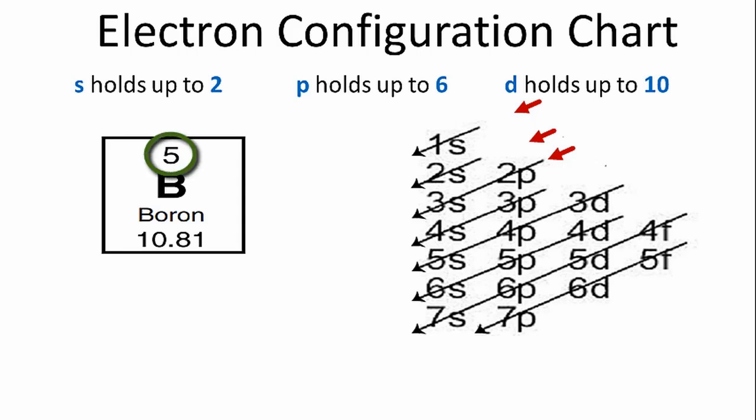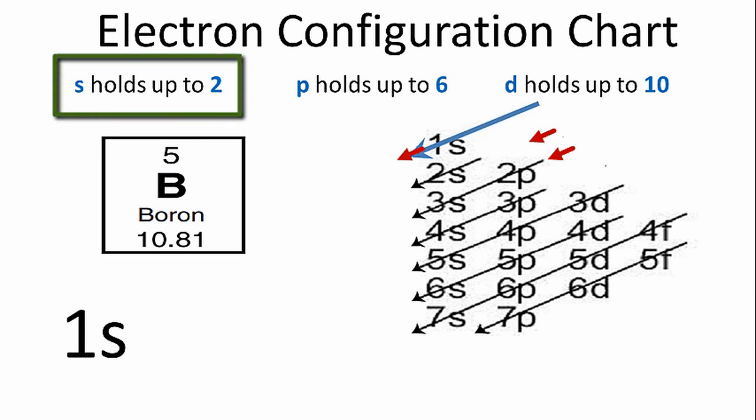We'll follow the chart, and we'll go down first to the 1s. Our first term is 1s, and we know that s orbitals can hold up to 2. So we'll put a 2 there.